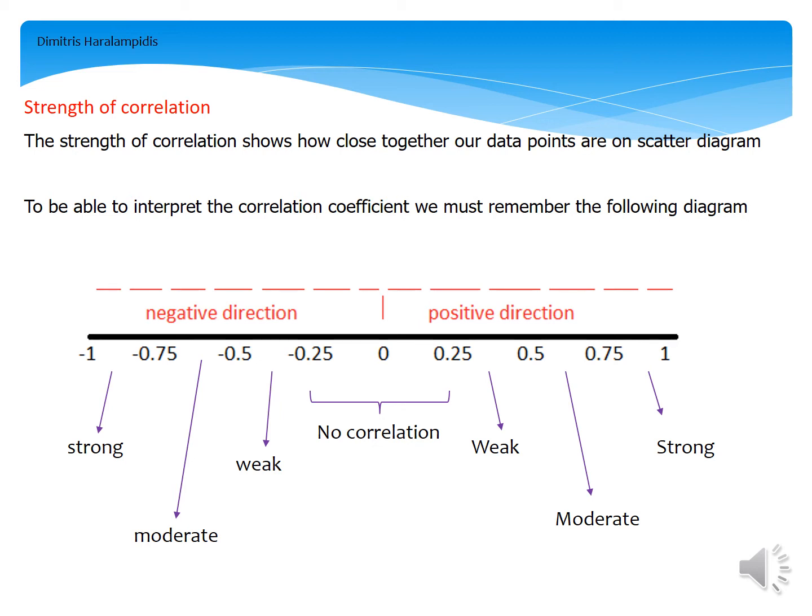As you can see from the diagram in front of you, when we have a positive value for our correlation coefficient, then we have a positive direction between the two variables. While on the other hand, a negative value for the correlation coefficient means a negative direction respectively.